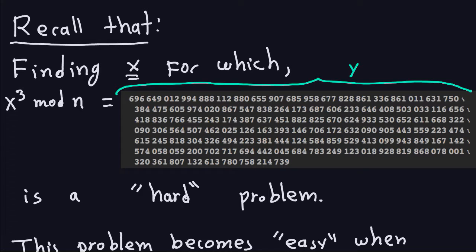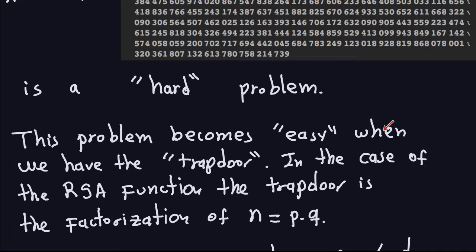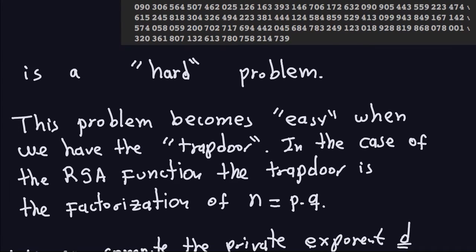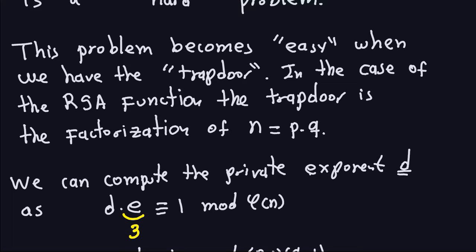Now this function that I have here, x cubed modulo n with this setup, has a trapdoor, and the problem is going to become easy when we have the trapdoor. In this case, in this particular case of the RSA function or any other RSA function, the trapdoor is the factorization of the number n. So that's why it's important that you choose p and q to be large so the factorization of n is hard, so people don't know the trapdoor—otherwise, of course, decrypting becomes easy.